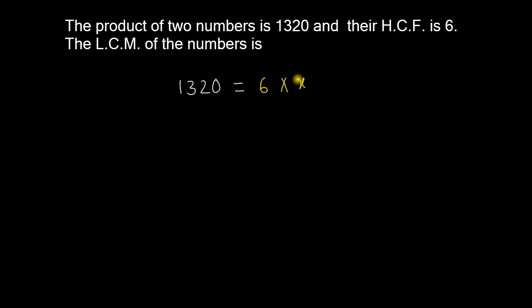The least common multiple is x. So simply we have 6x equals 1320. Simply, x equals 1320 divided by 6.